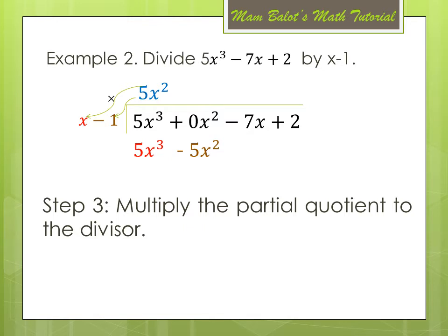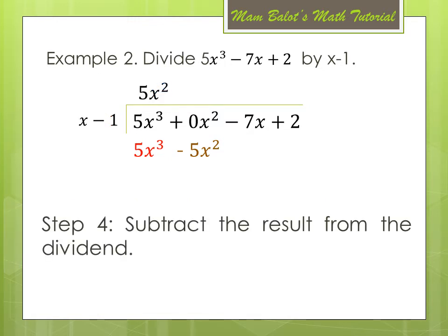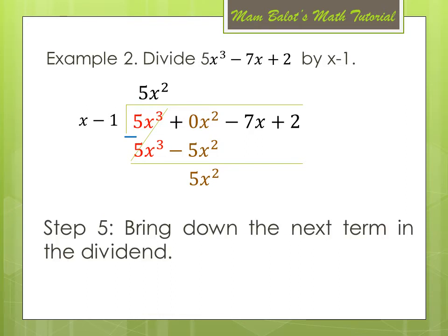Step 4: Subtract the result from the dividend. Since they are like terms, we subtract easily. 5x cubed minus 5x cubed cancels out to 0. Then 0 minus negative 5x squared becomes positive 5x squared. Step 5: Bring down the next term in the dividend, which is negative 7x. So we now have 5x squared minus 7x in the bottom row.